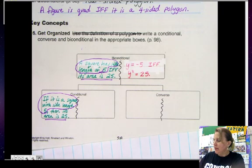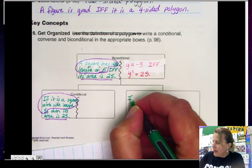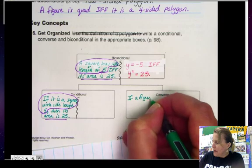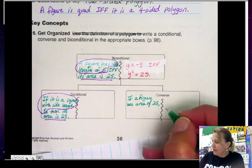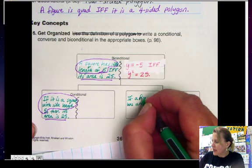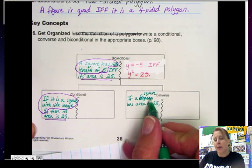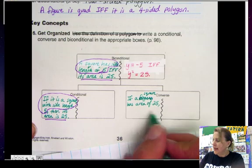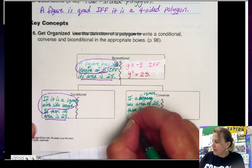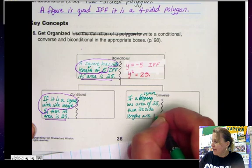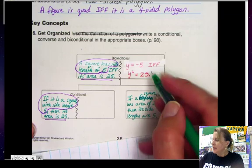The converse of the statement would be this but flip-flopped. So if a figure has area of 25—I should say a square, sorry. Let's change that because our object is a square. So if a square has area of 25, then its side lengths are 5.